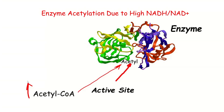What happens is when acetyl-CoA levels go up, the acetyl groups literally just stick to lysine amino acids in the enzyme. That process seems to be spontaneous — we don't actually need an enzyme to make this happen. The acetyl groups just spontaneously stick onto the enzymes, and this happens all the time. But as acetyl-CoA levels go up, you've got more acetyl groups around, so it happens more often.